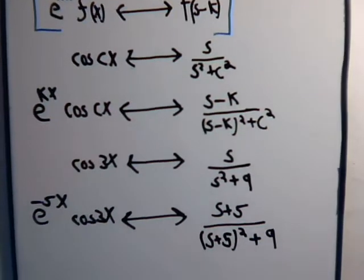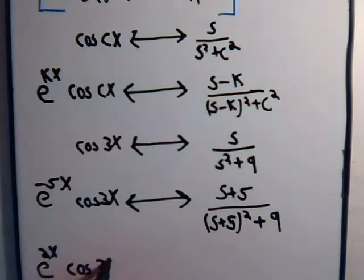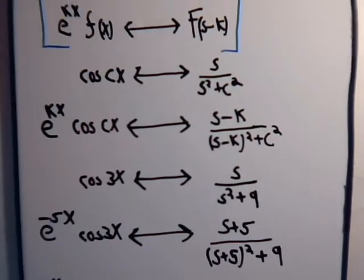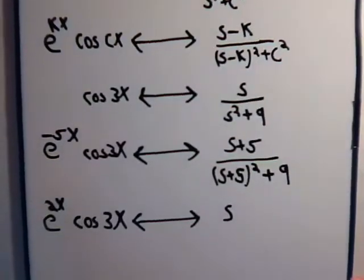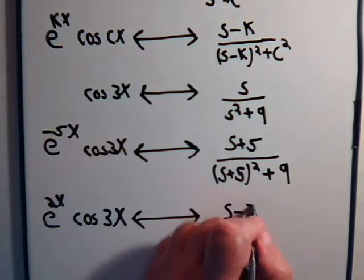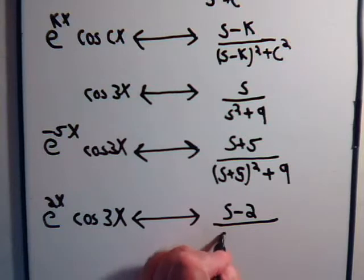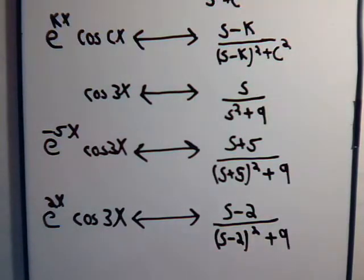If we had e to the 2x multiplied by the cosine of 3x, then the corresponding Laplace transform would have k equal to positive 2, so it becomes f of s minus 2. Up in the numerator, instead of s it's going to be s minus 2, and in the denominator instead of s squared it's going to be s minus 2 quantity squared plus 9.